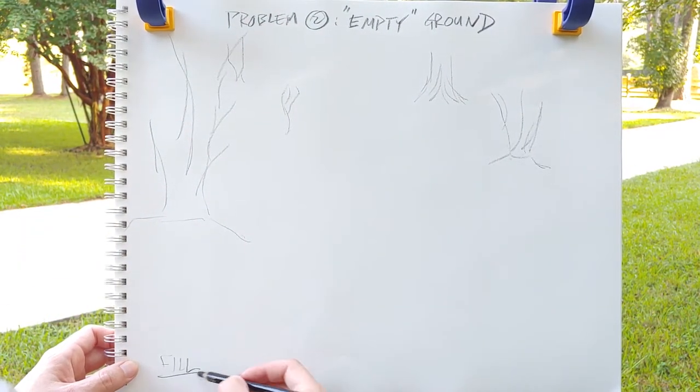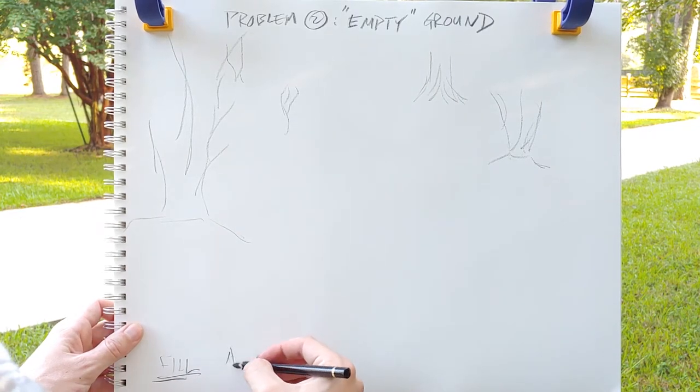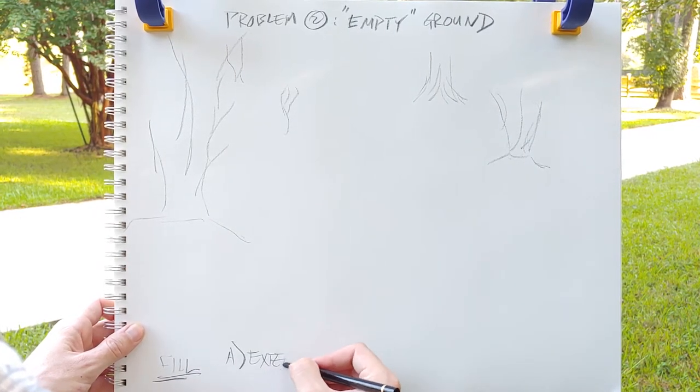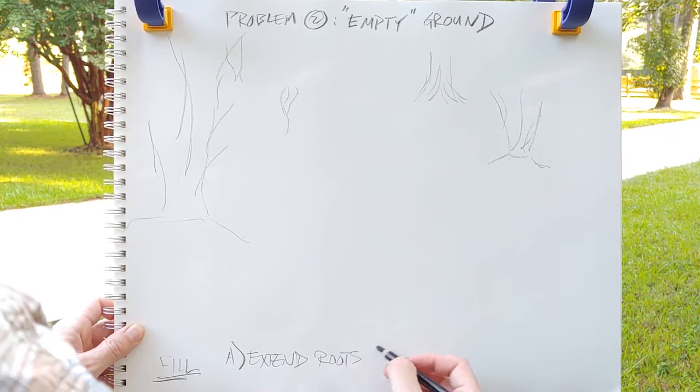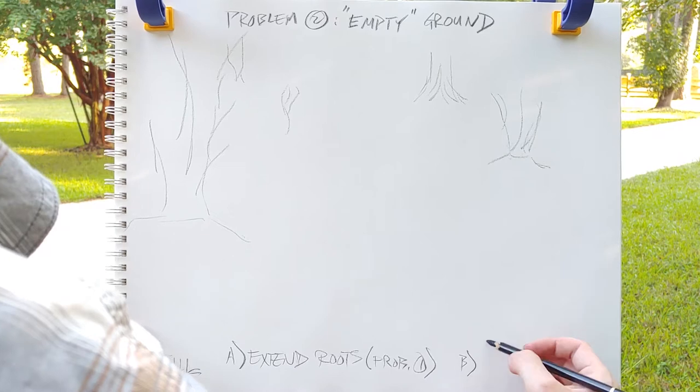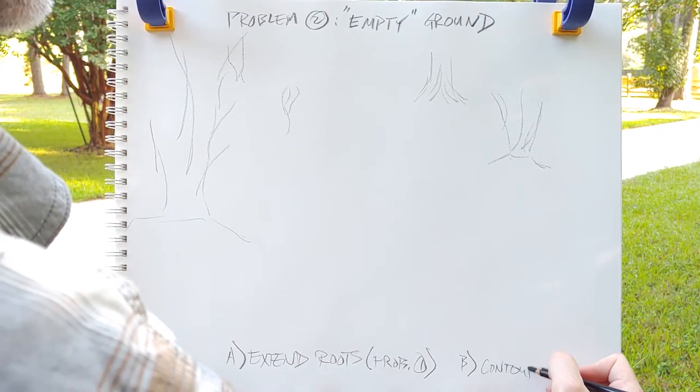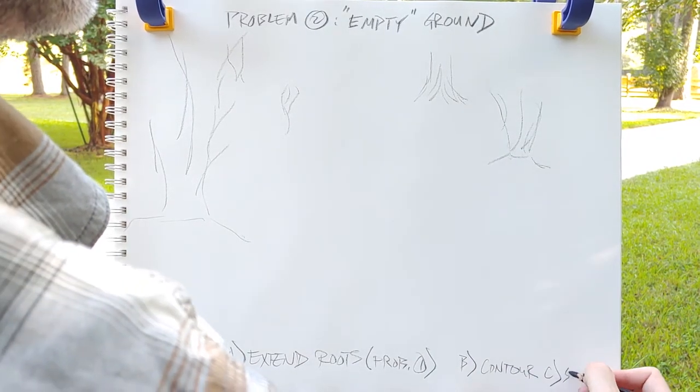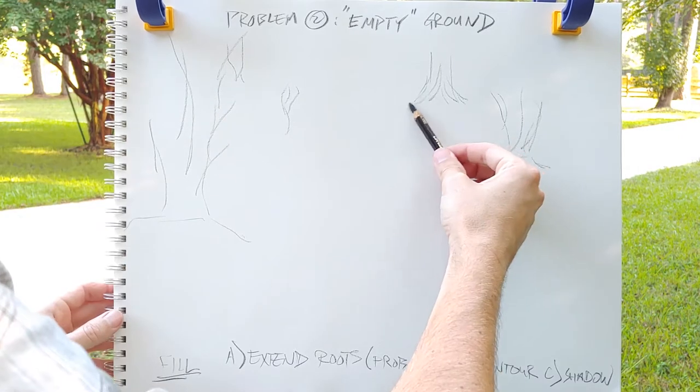They just sort of seem to be floating there. The basic idea is you just fill the empty ground with something. In a different video we talked about extending the roots - that's one solution. You can also use cross contour lines and you can also use shadows.